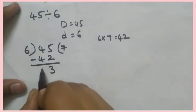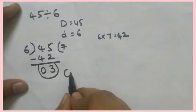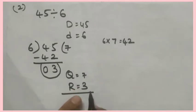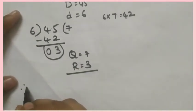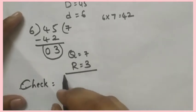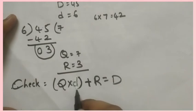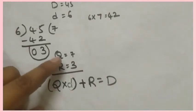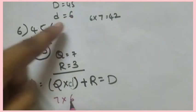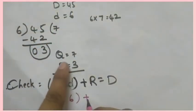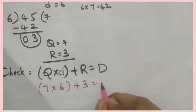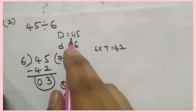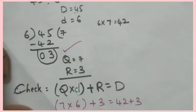5 minus 2 is 3, and 4 minus 4 is 0. So Q (quotient) is equal to 7 and R (remainder) is equal to 3. Now we will do the check. Quotient into divisor plus remainder equals dividend: quotient is 7, divisor is 6, remainder is 3. 7 sixes are 42, plus 3 is 45. We got the dividend, so this answer is correct.